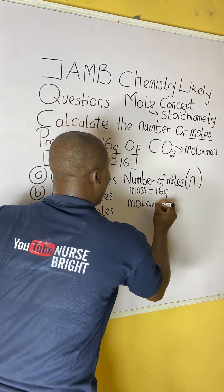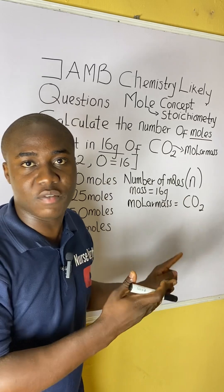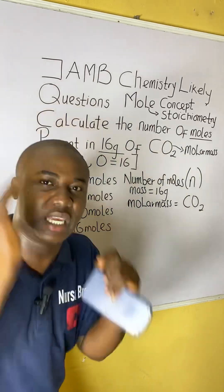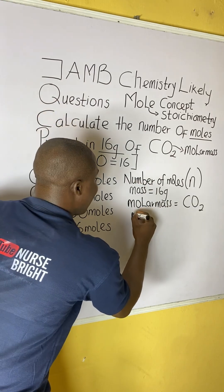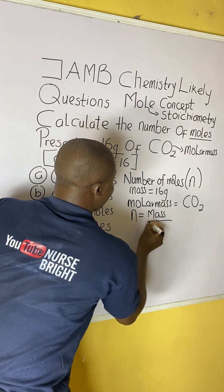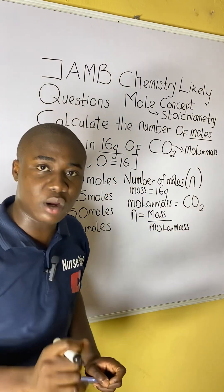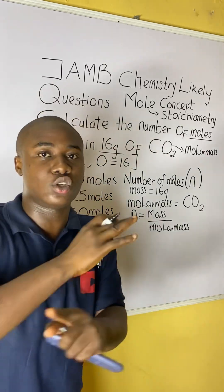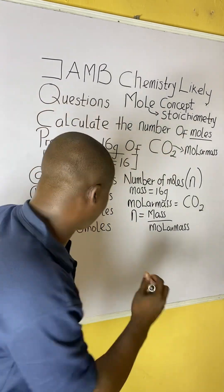From the compound CO₂, we can get the molar mass. Before we progress, let me write out the formula. There is a formula that relates mass and molar mass for number of moles, and that formula is: n equals mass divided by molar mass. From the compound, we can calculate the molar mass — let me teach you how to do that.